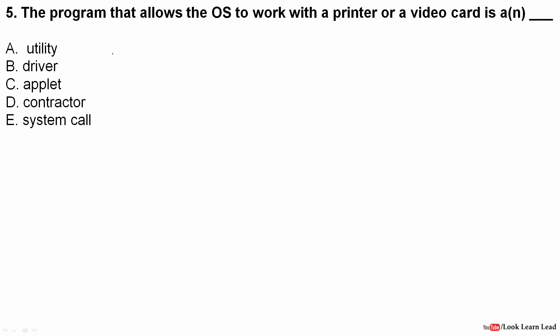Next question: the program that allows the operating system to work with the printer or a video card is called what? Since we are talking about a software, if it were hardware it would be a driver. But since it is software, the answer is a system call — a call made by the operating system to connect to hardware devices like a printer or video card.